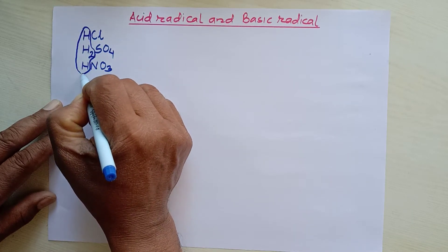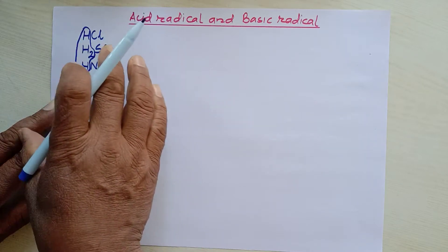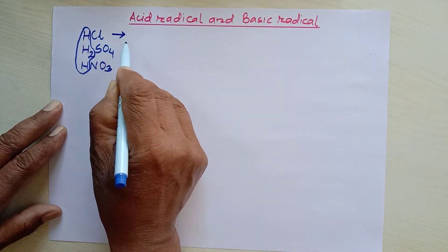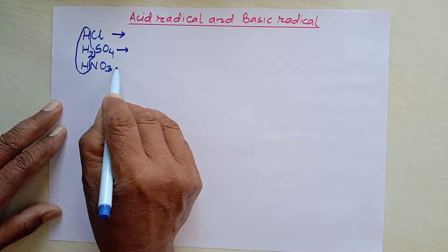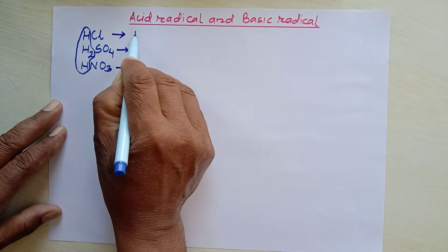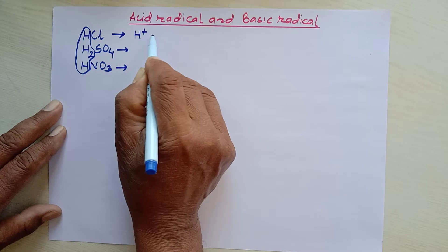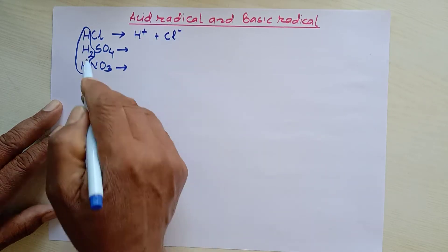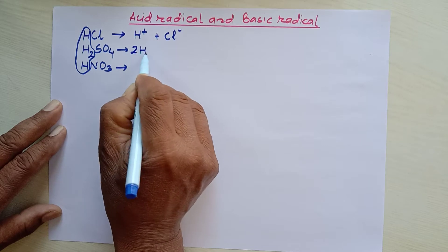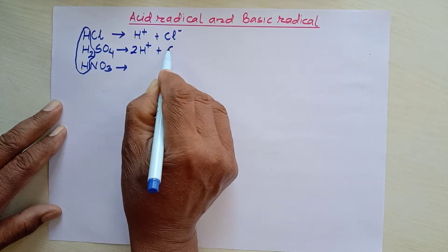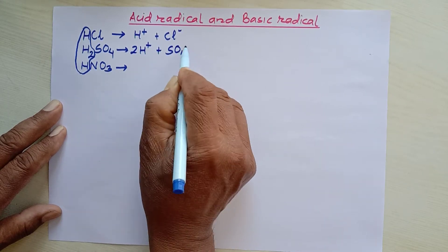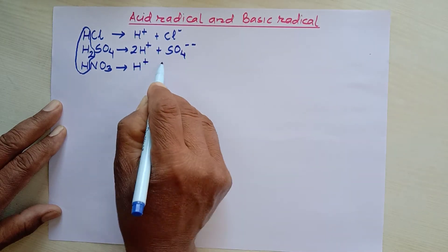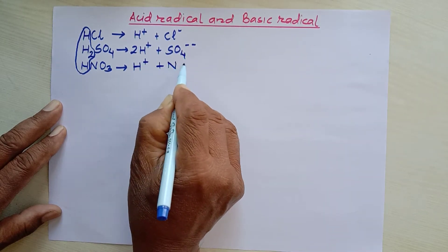Now look at this — hydrogen is the identification of acid, because acid is a compound which gives hydrogen ion in aqueous solution. When HCl dissolves in water, it gives hydrogen ion and chloride ion. All acids give hydrogen ion; this is the identification of acid.